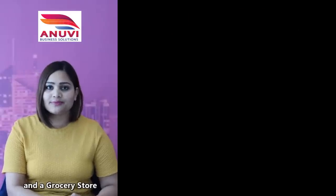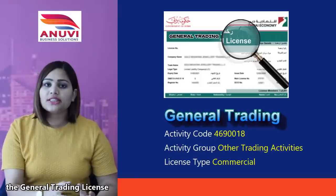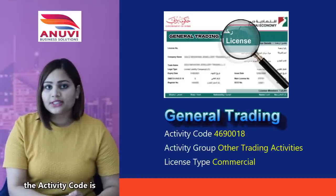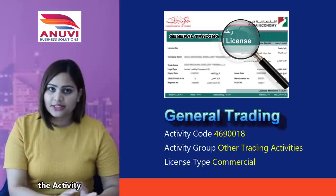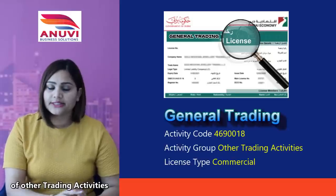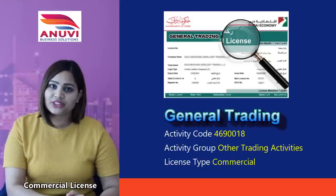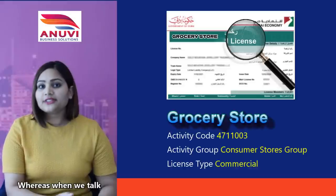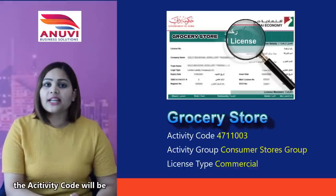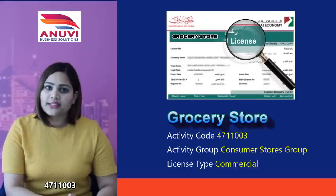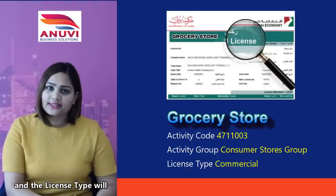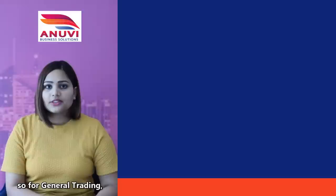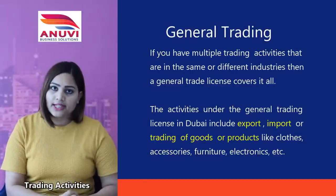When we talk about a general trading license, the activity code is 4690018, and it falls under the activity group of other trading activities, and the license type will be a commercial license. Whereas when we talk about a grocery store, the activity code will be 4711003, the activity group will be a consumer store group, and the license type will also be a commercial license.